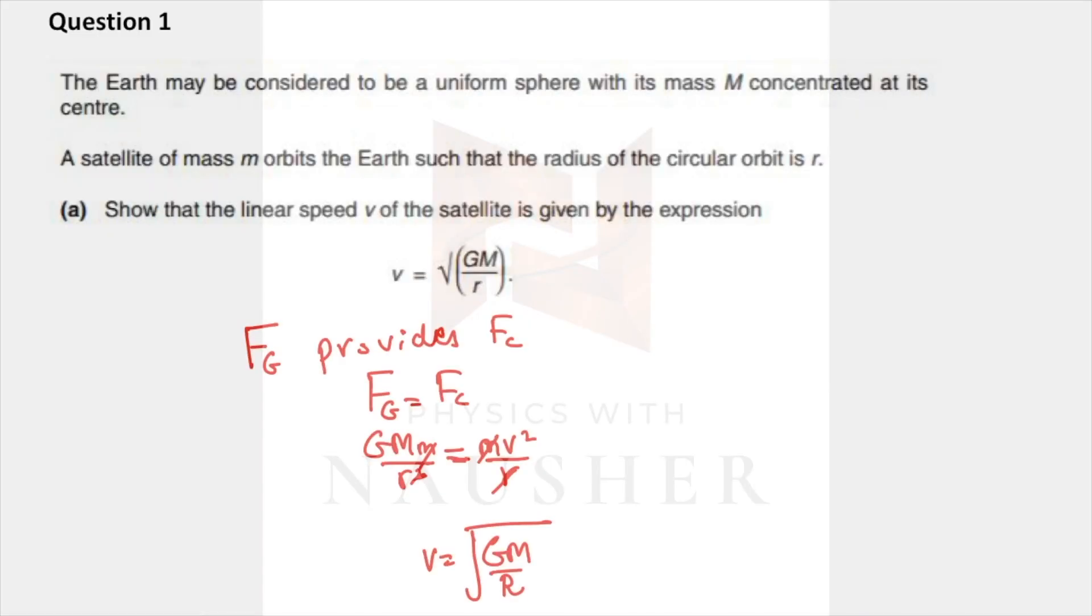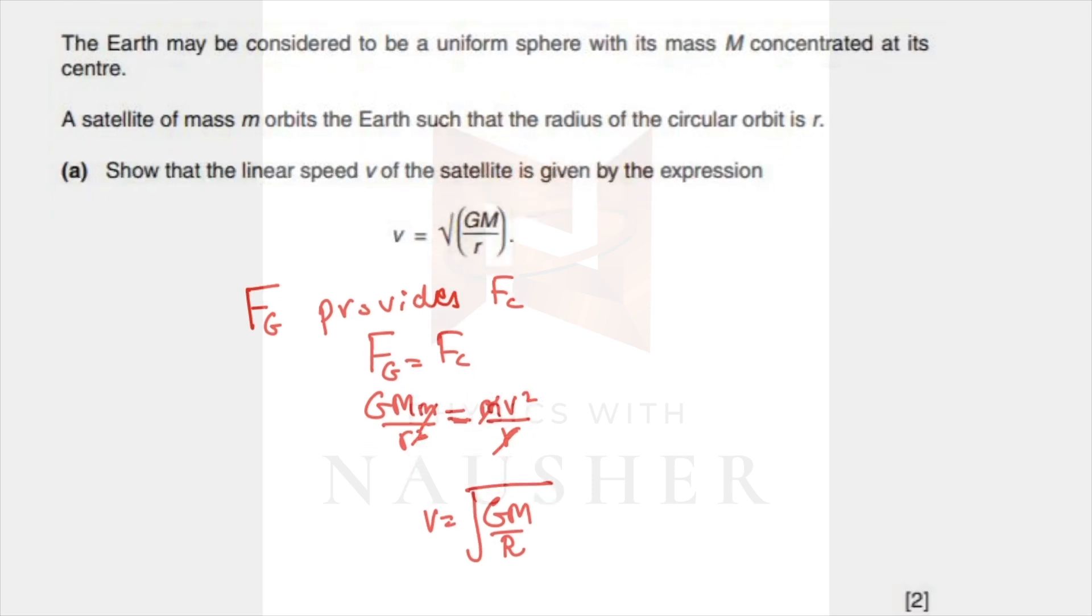Question number one: you have to prove this equation. Start with FG provides FC, force of gravitation provides centripetal force. So force of gravitation equals FC: GMm over r squared equals mv squared over r, and you prove this relationship.